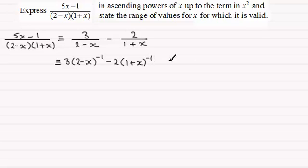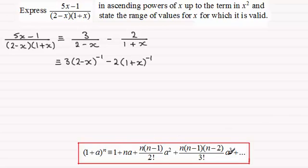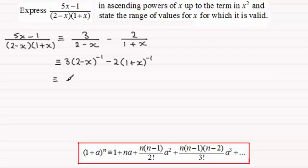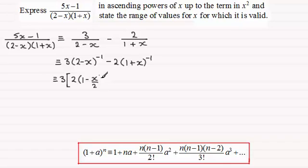As a brief reminder, we'll be using the binomial expansion formula because the power here is not a positive integer. Remember that if we're to use the formula, we need to make sure we've got a 1 at the start of the bracket. We're OK on this one — 1 plus x — but not on the 2 minus x term. To handle that, we create a square bracket and pull out the 2, giving us 2 times 1 minus x over 2, all to the power minus 1.